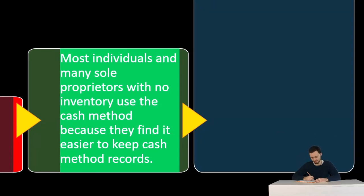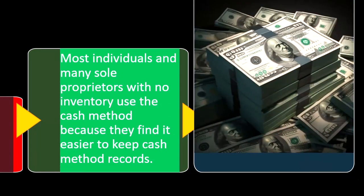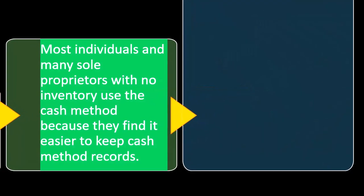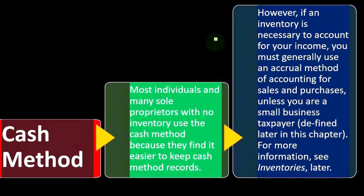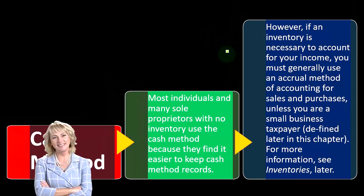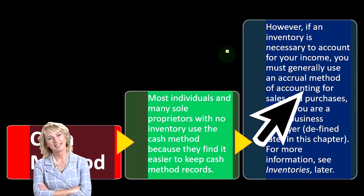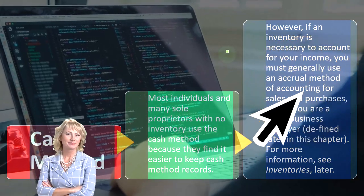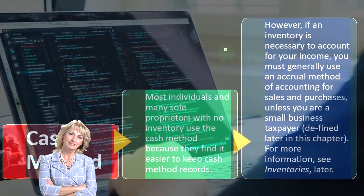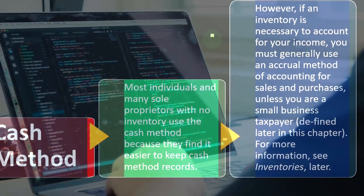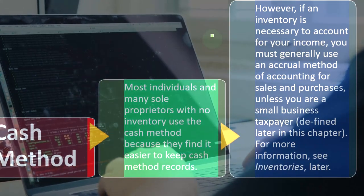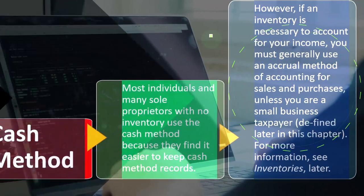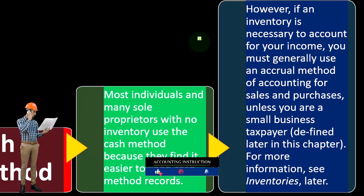Most individuals and many sole proprietors with no inventory use the cash method because they find it easier to keep cash method records. If you have a small business, the cash method is often an easier way to do the bookkeeping. And if you have accounting software, it's getting easier to construct your books from actual bank information using bank feeds and software like QuickBooks. However, it will be industry-specific in terms of how easy that is, and there are times when you have to deviate from a cash-based system.